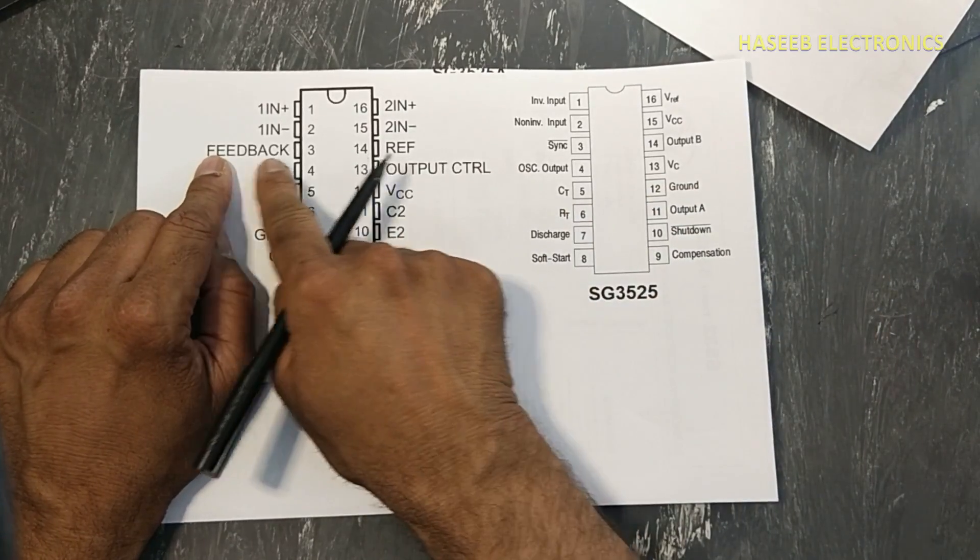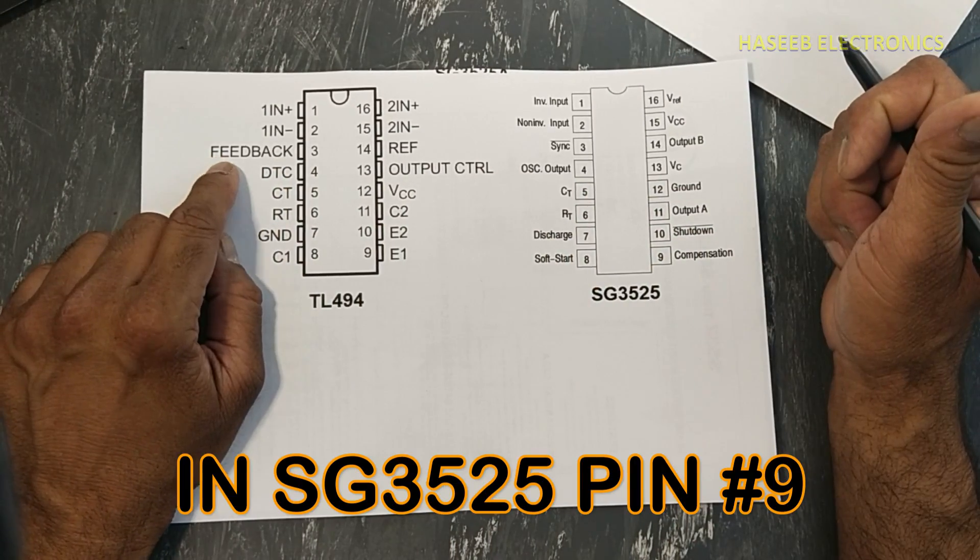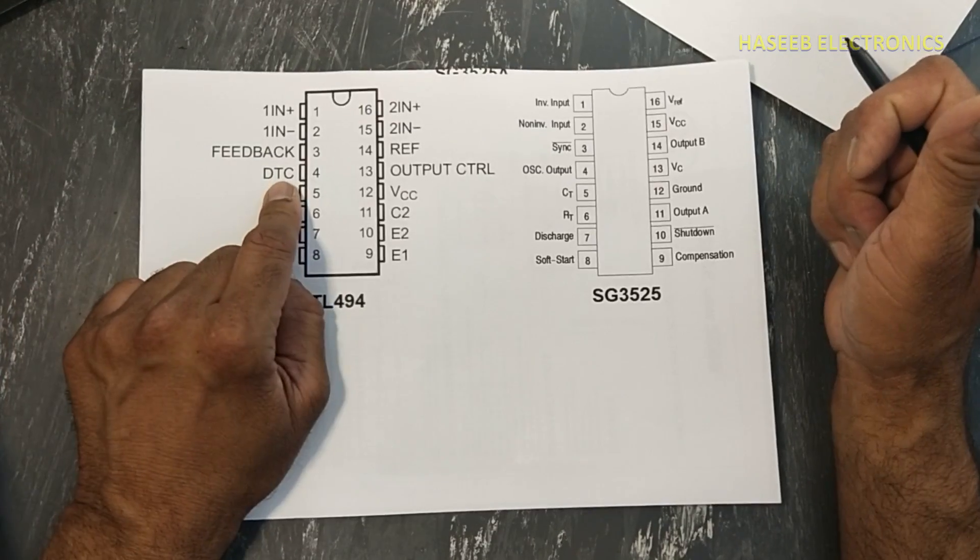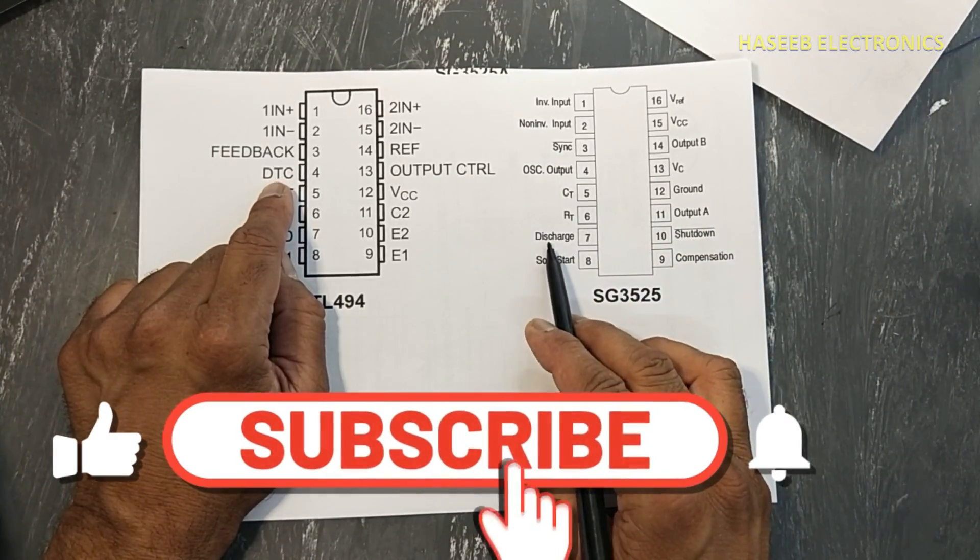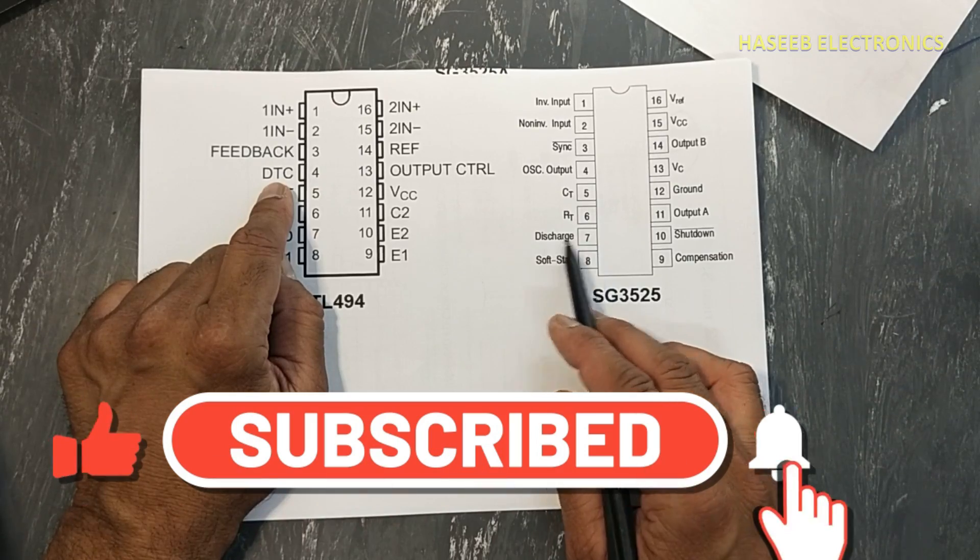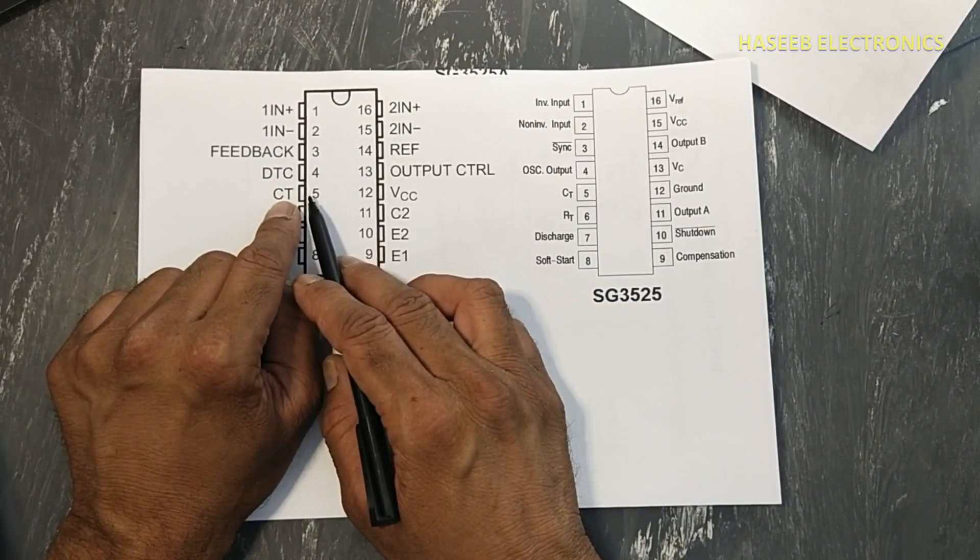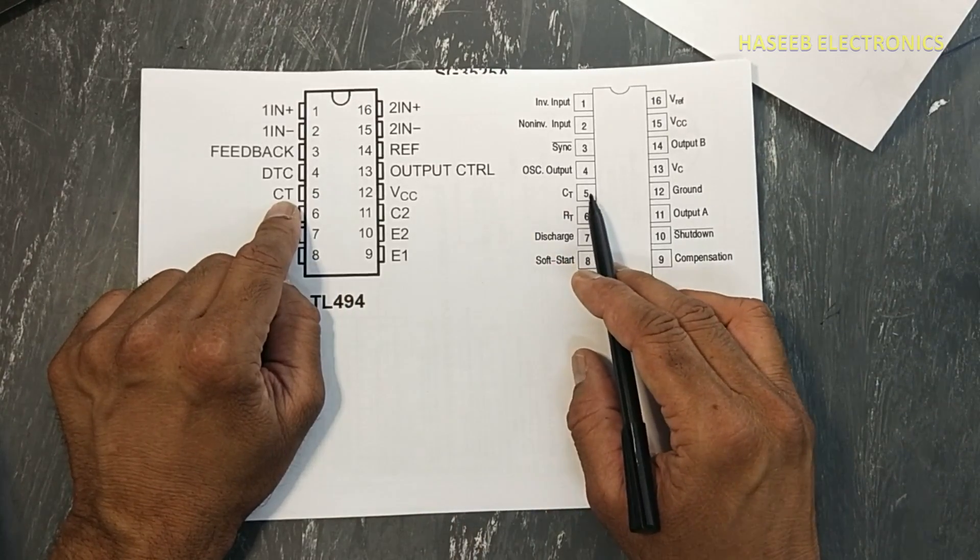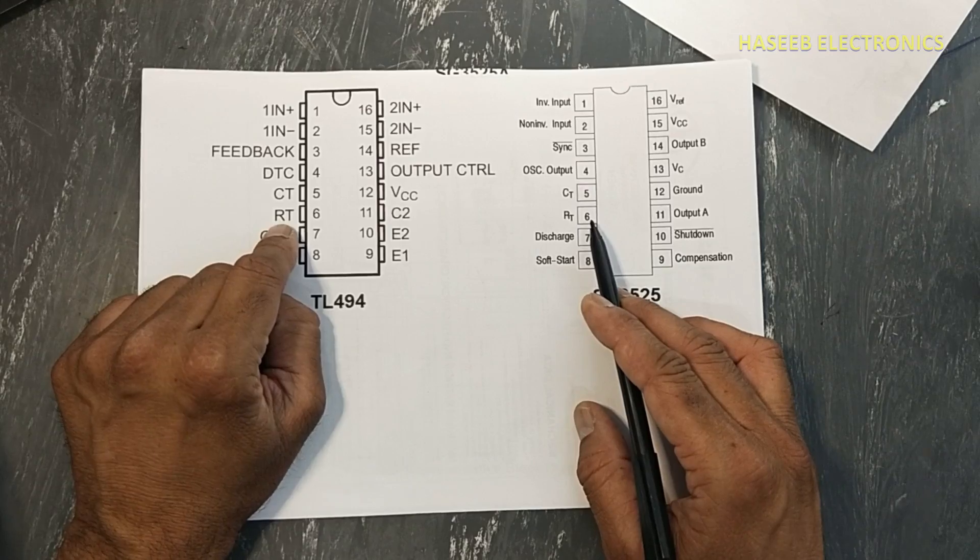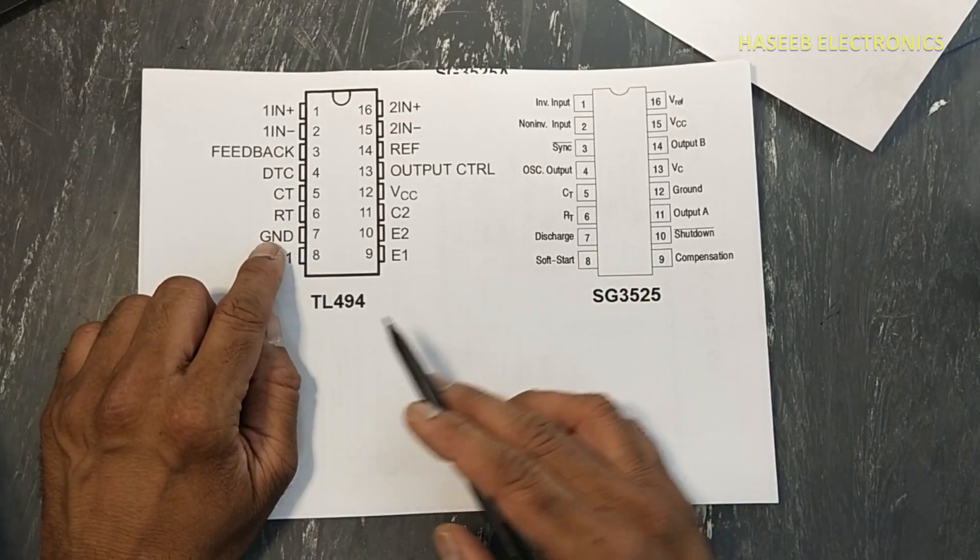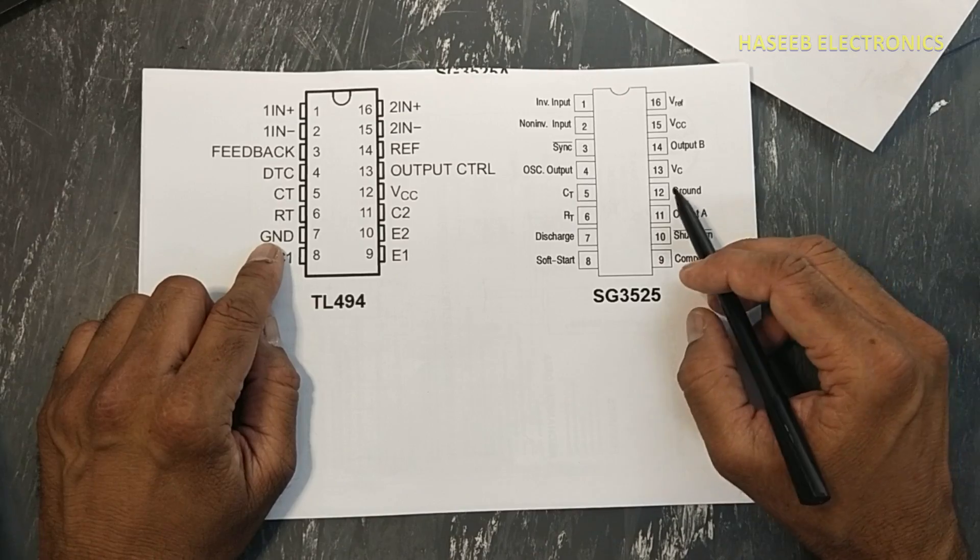Then here is feedback compensation. Here is dead time control pin number four, and here is pin number seven dead time control, that is discharge pin. Then CT, pin timing capacitor pin number five, timing capacitor pin number five. RT, timing resistance pin number six and pin number seven. Ground, and here ground is at pin number 12.